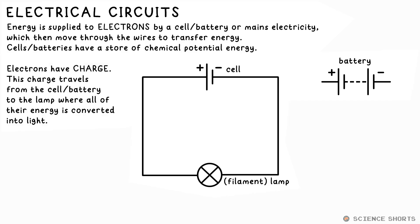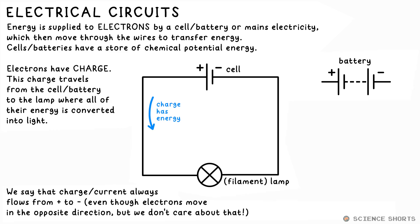The battery has a store of chemical potential energy. When connected in a complete circuit, this energy is transferred to the electrons, which move through the wires. This movement of charge is called a current, and we say it always goes from the positive terminal of a battery to the negative. You might realize that seems a little bit backwards, but that's just the way it has to be, it's convention.